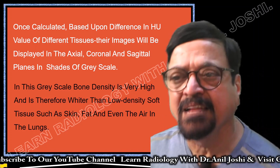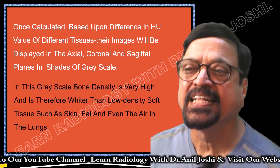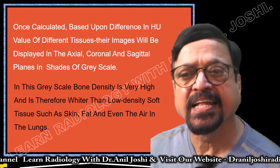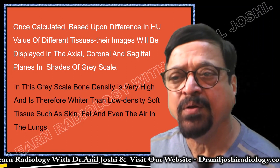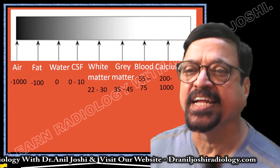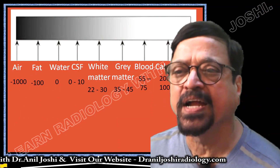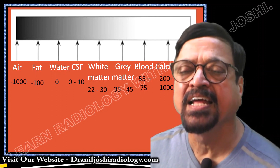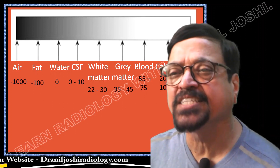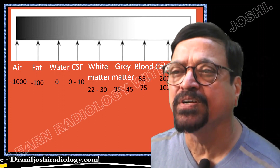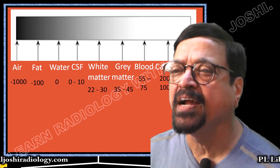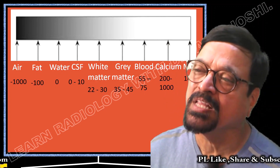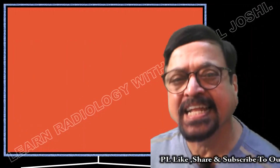In this grayscale, bone density is very high and therefore appears white. Low-density soft tissues such as skin, fat, and air in the lung have different CT values: air goes negative, fat goes negative, and soft tissues have different CT values. Specifically: air is −1000; fat is up to −100; water is 0; CSF is 0 to 10 (due to electrolytes and WBCs); white matter of brain is 20–30; gray matter is 35–45; blood is 55–75; calcification is around +200; bone can go up to 1000; and metal is 1000+.